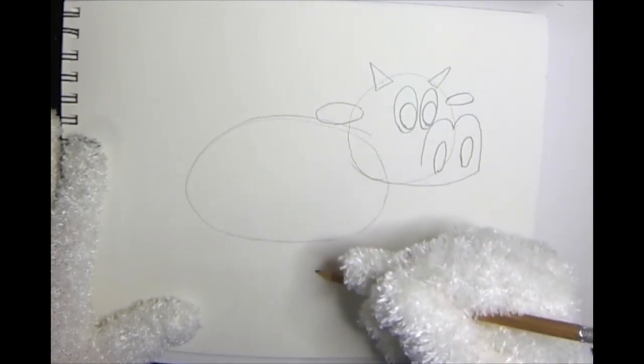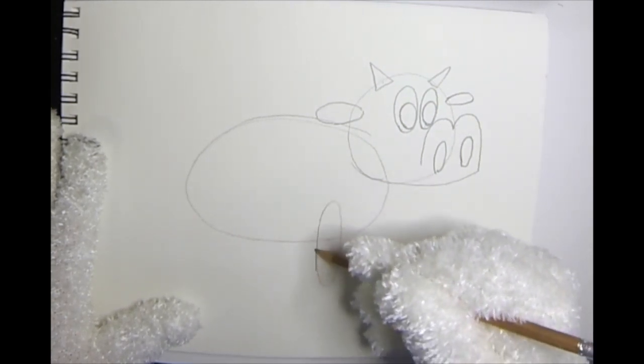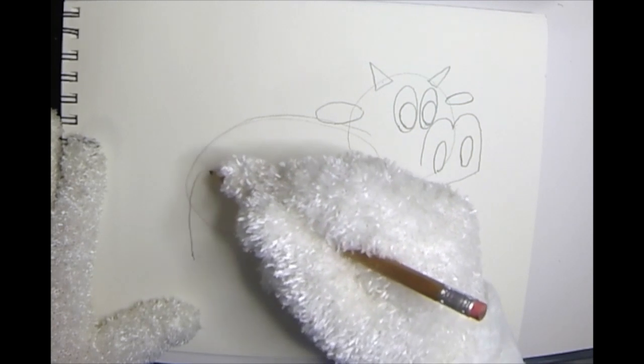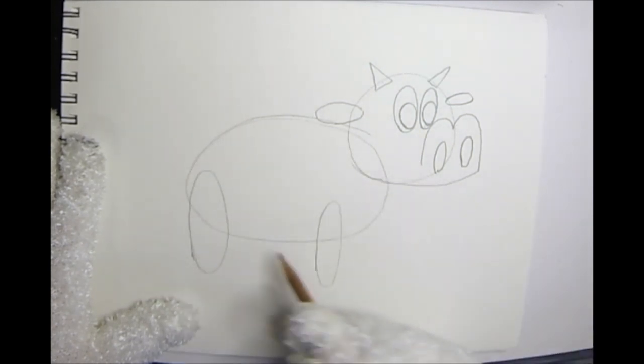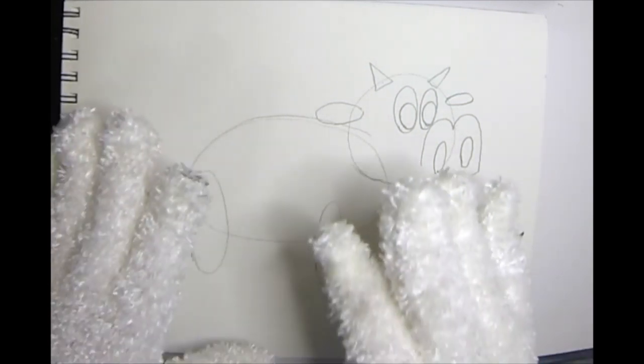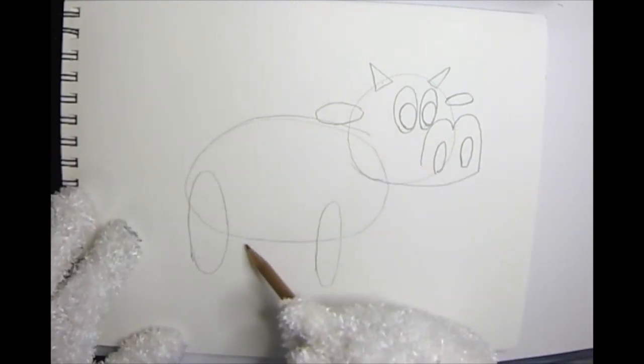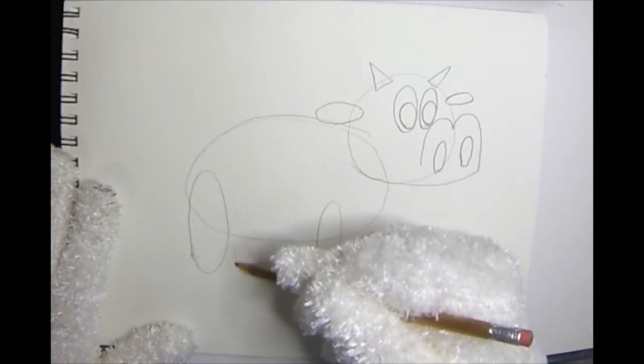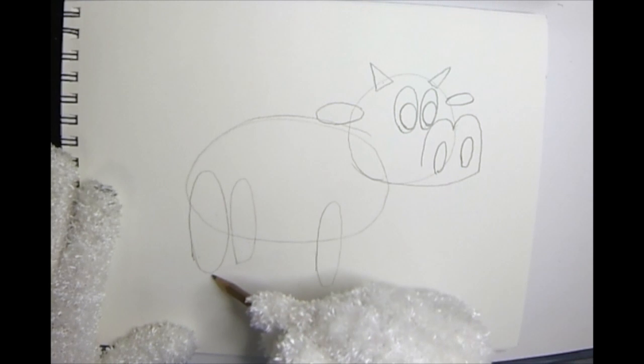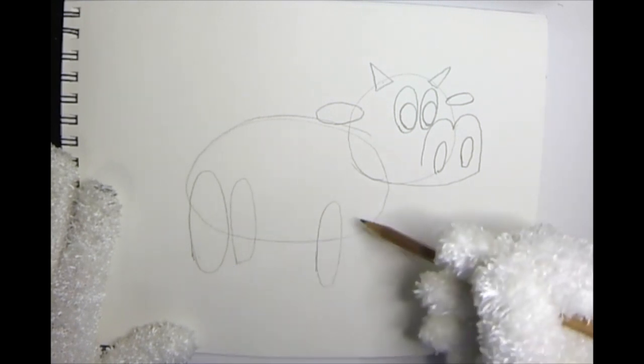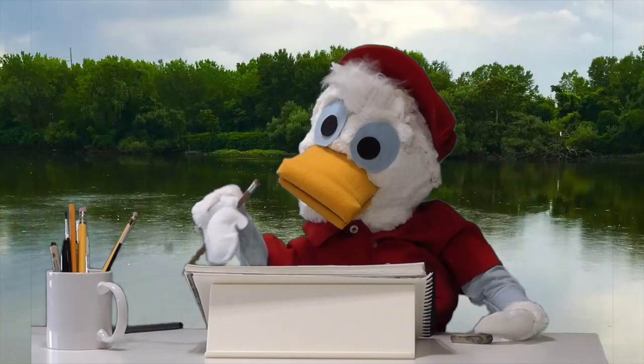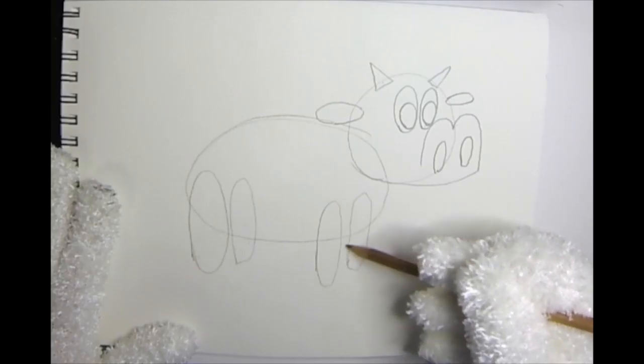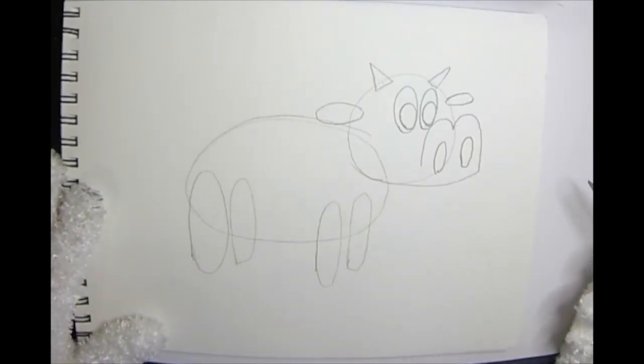We're going to add a couple more oval shapes right at the bottom there for the legs. We're going to do two right in the front for the legs that are closest to us. We're going to do two more for the legs that are further away. Those ones that are further away are going to be a little bit shorter, just like that. See how it's a little bit higher? There we go. All four legs. Two close ones and the two ones in the back.